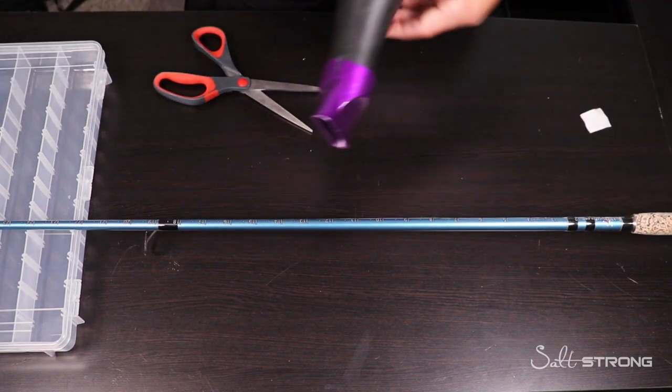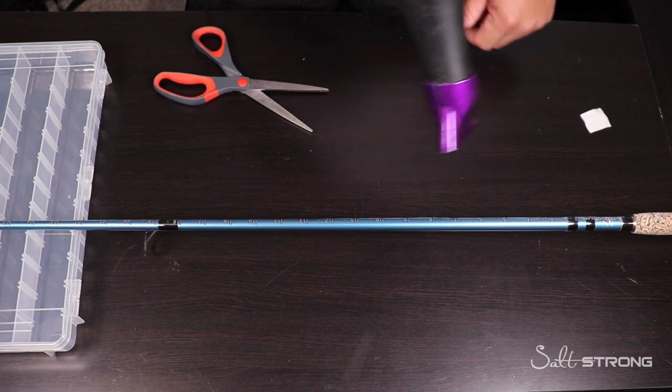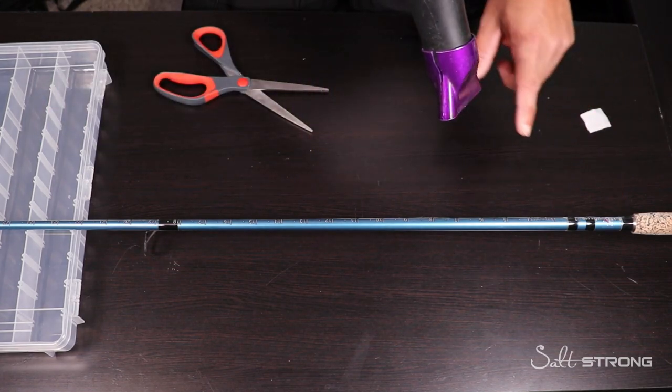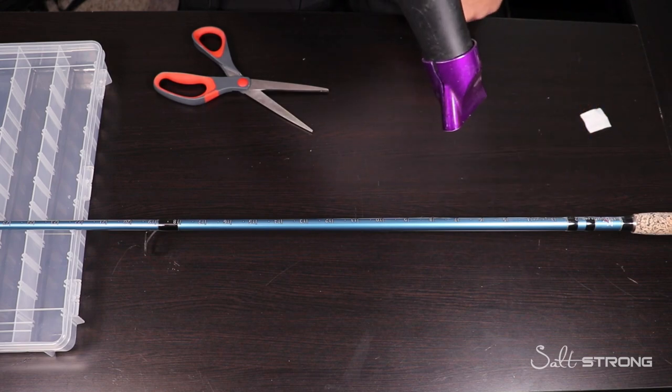Then from there you're going to take your blow dryer, and you're slowly just going to work down the rod going from one end to the other, and then just slowly pressing in the sides and the valleys and the grooves that the tape is sitting on.